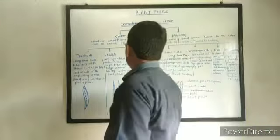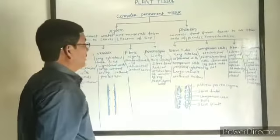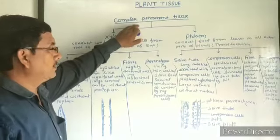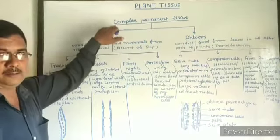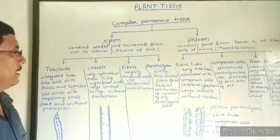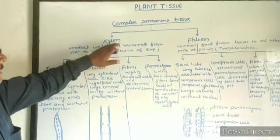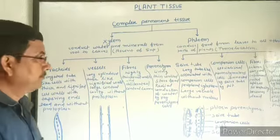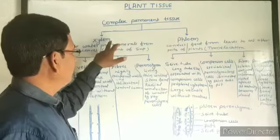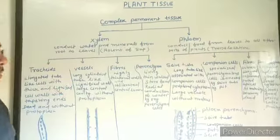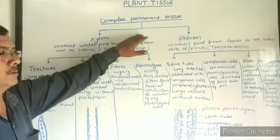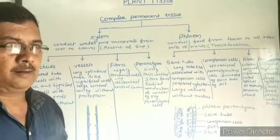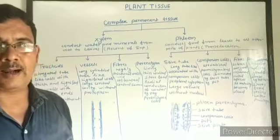Here is the complex permanent tissue. The tissue which is made up of more than one type of cells and they have lost their ability to divide is called complex permanent tissue. Complex permanent tissue is of two types: xylem and phloem. Both are the conducting tissue, so complex permanent tissue are also called vascular tissue. Xylem and phloem together constitute vascular bundles.